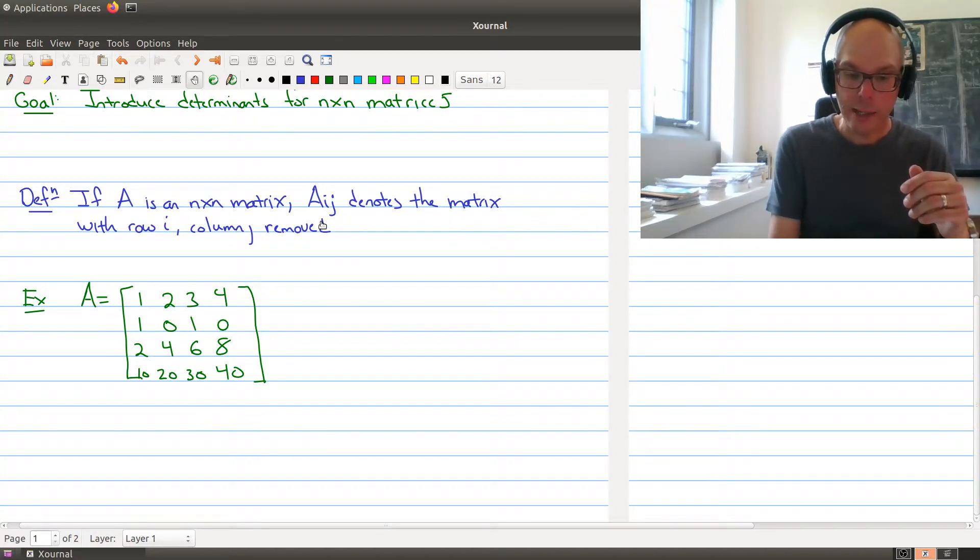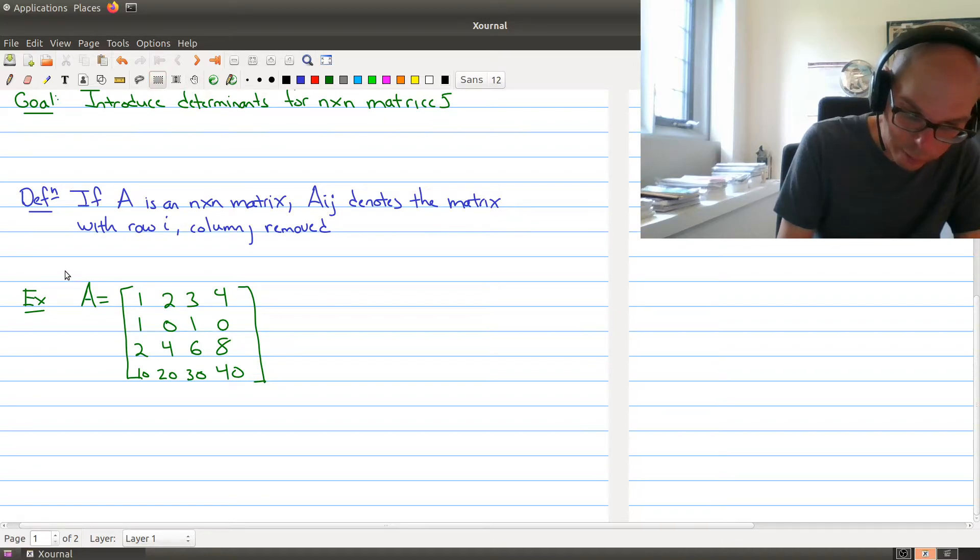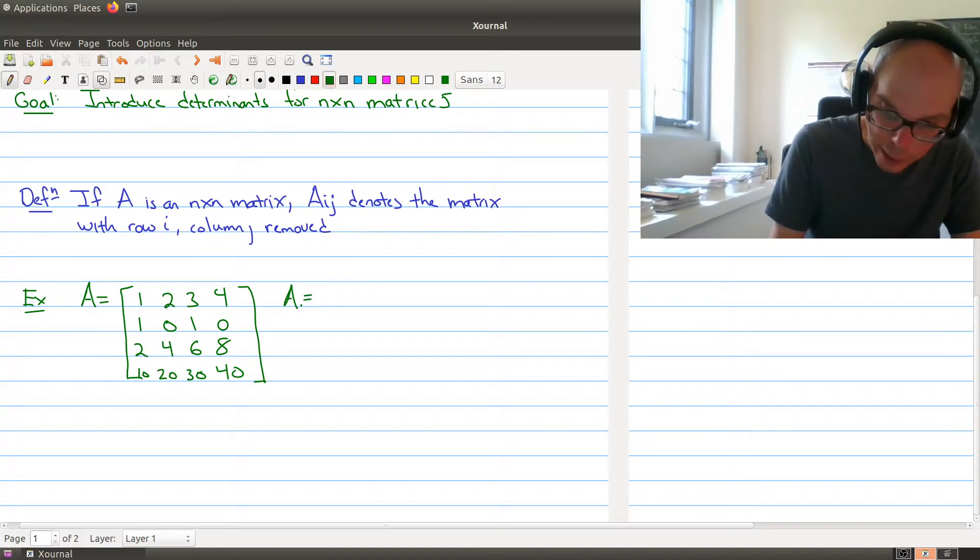So here we have a definition that kind of defines a submatrix of our original matrix. So if we have an n by n matrix, A sub ij denotes the matrix where we remove row i and column j. So it's a little bit easier to illustrate what's going on here via an example. So let's say I have my matrix A right here. And let's see if I can do this. This is always a little... I was going to try to cut and paste, but maybe I'll just rewrite it. So let's say I want to look at A11. So I'll just rewrite my matrix: 1, 2, 3, 4, 1, 0, 1, 2, 4, 6, 8,